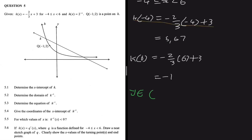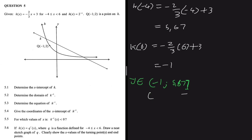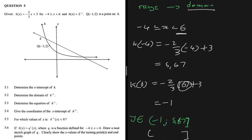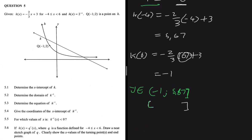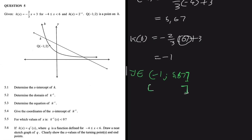We write the range of k of x as the interval from minus 1 to 5.67. We use a square bracket at 5.67 because minus 4 is included in the domain, and a round bracket at minus 1 because 6 is excluded from the domain. This is the range of k of x. So the domain of k inverse has x as an element of the real numbers over that same interval.